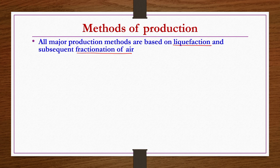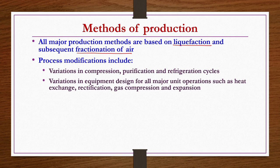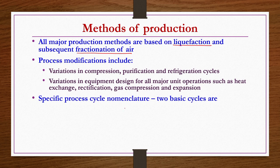From one industry to another, situations may be different, so depending on these variations there may be slight differences in production methods. Variations include compression, purification and refrigeration cycles, and equipment design for unit operations such as heat exchange, rectification, gas compression and expansion. Specific process cycle nomenclatures are well established.